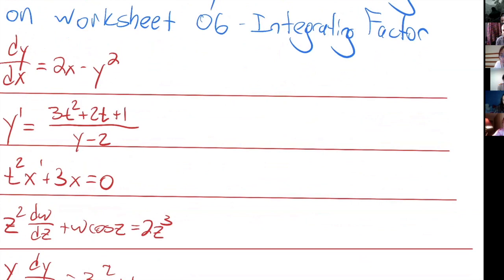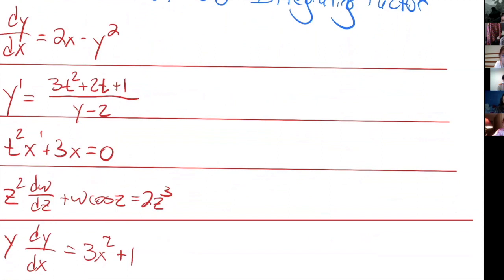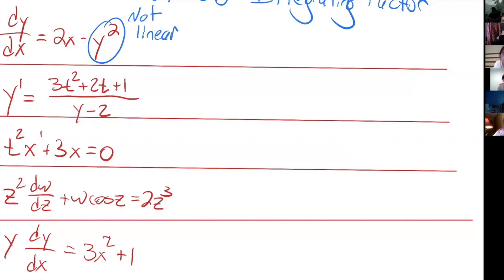I want to give you guys a chance to talk about these questions from the reading quiz. I think everybody had four out of five, some subset of these. We were trying to classify them as whether or not they're linear or separable. So this first one is not going to be linear because of this term — the dependent variable occurring to the power of two. And this is also not separable because it's a difference of two things as opposed to a product.